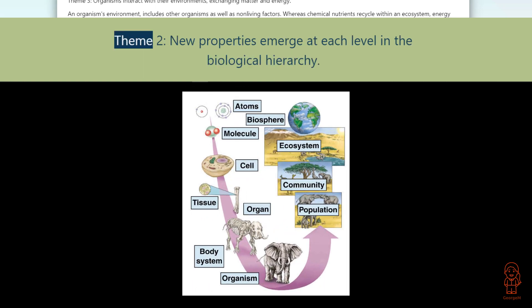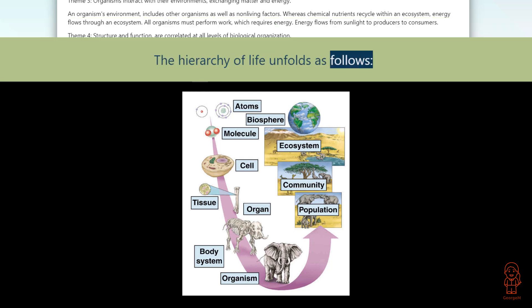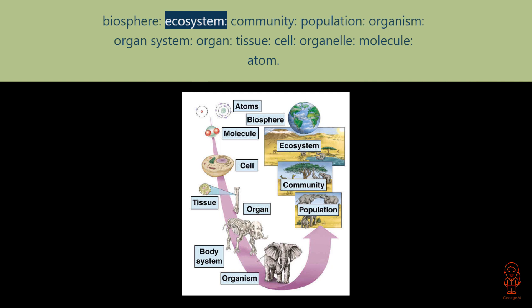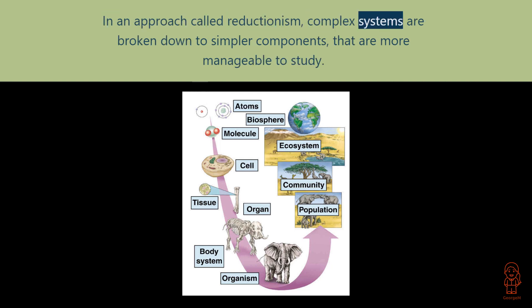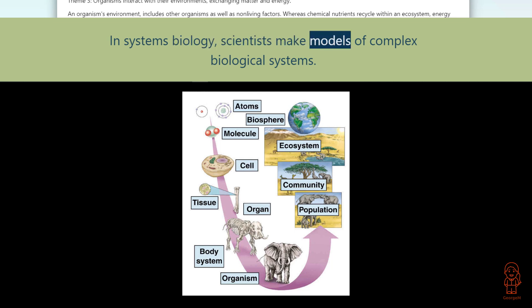Theme 2: New properties emerge at each level in the biological hierarchy. The hierarchy of life unfolds as follows: biosphere, ecosystem, community, population, organism, organ system, organ, tissue, cell, organelle, molecule, atom. With each step upward from atoms, new properties emerge as a result of interactions among components at the lower levels. In an approach called reductionism, complex systems are broken down to simpler components that are more manageable to study. In systems biology, scientists make models of complex biological systems.